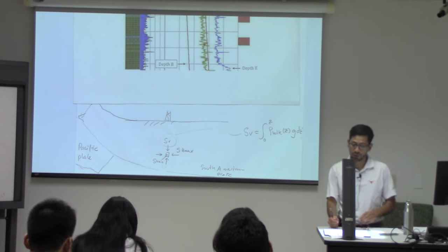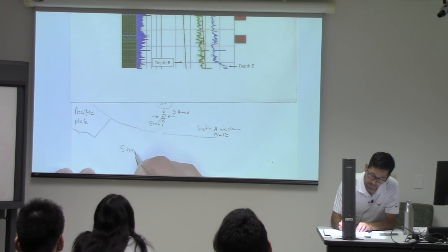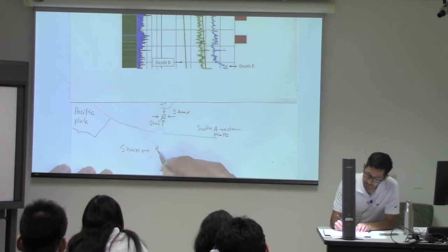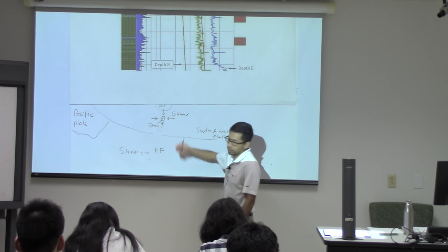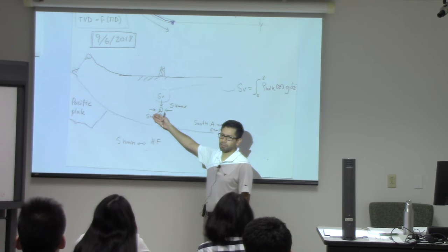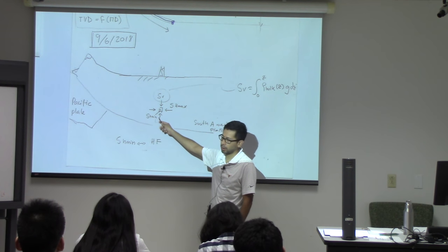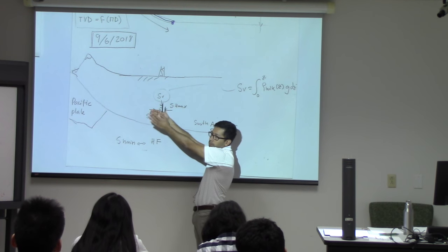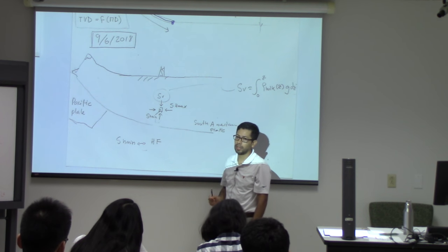Just as a brief overview: the value of SH-min, which is the minimum principal stress or the least principal stress, is usually determined through hydraulic fracturing. If you were to do a hydraulic fracture, the absolute minimum pressure that you need to open that fracture is the minimum principal stress. Because nature is lazy and always tries to do the least amount of work, a fracture will open always perpendicular to the minimum principal stress.